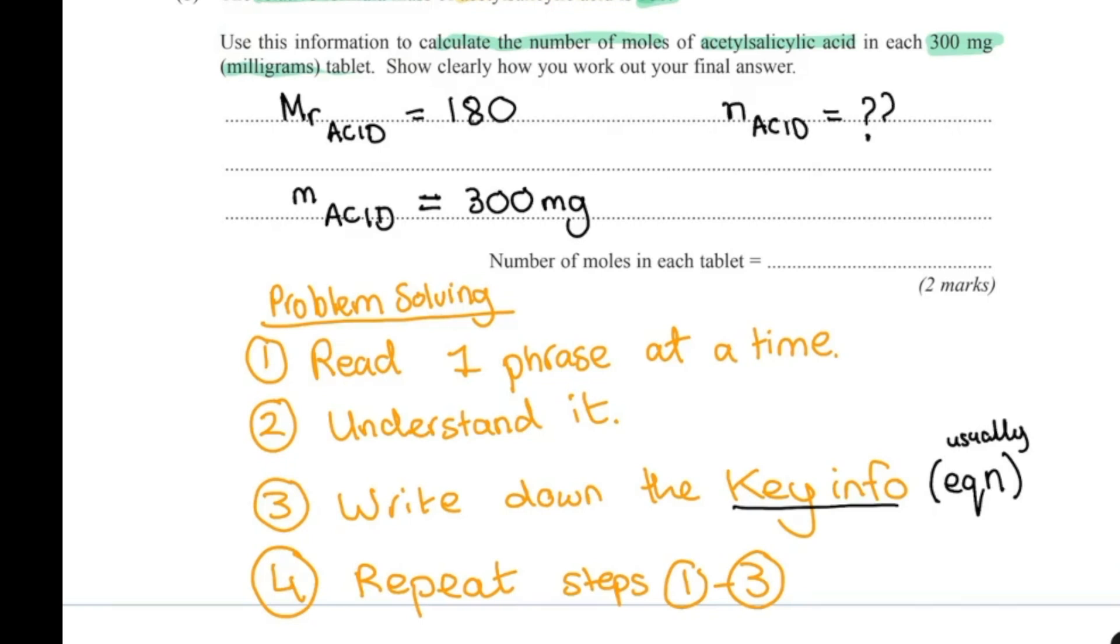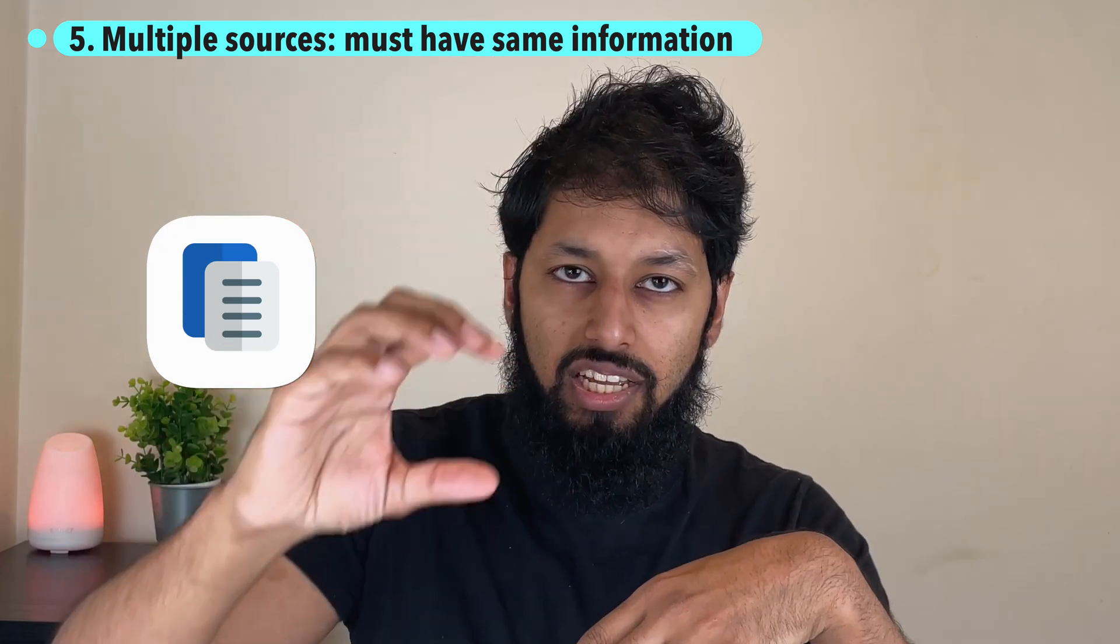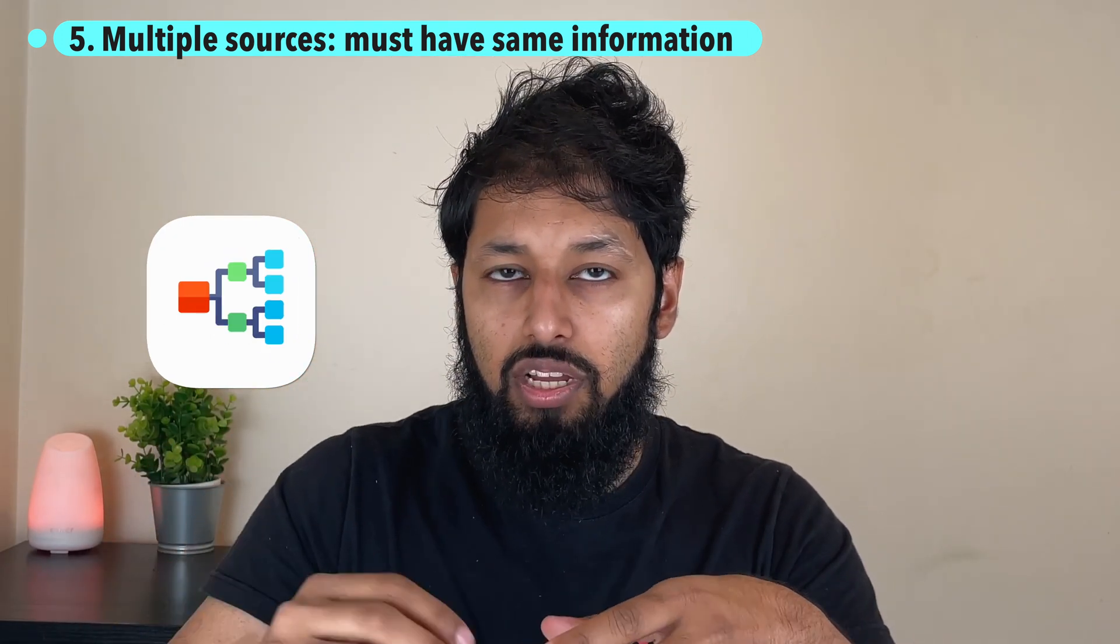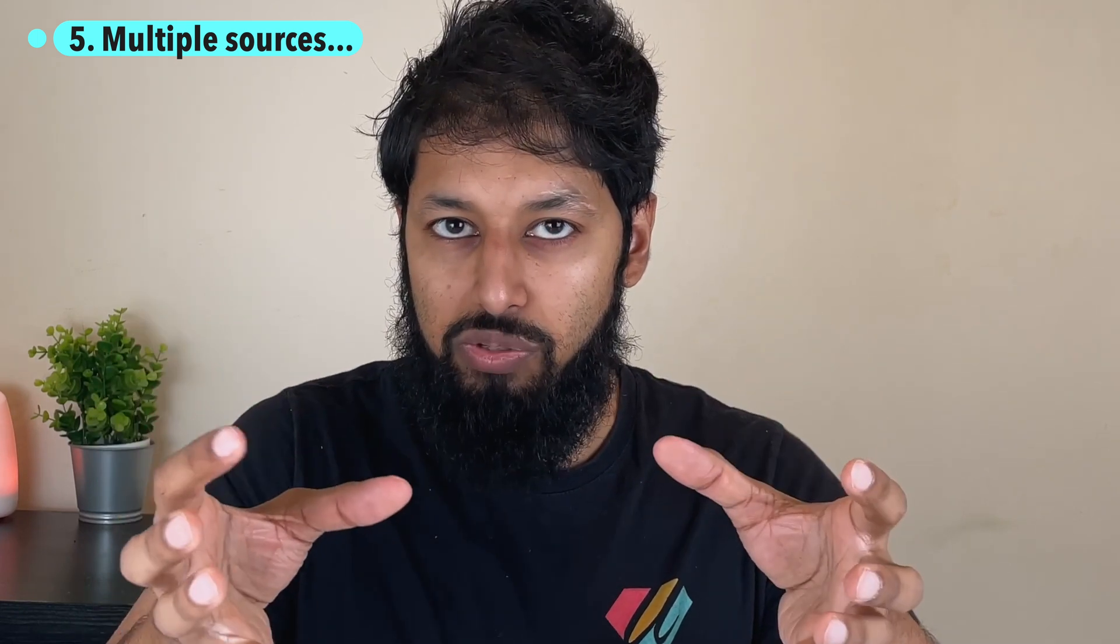There's no information, this is what we are working out. Number five is if there are multiple sources, for example they've got a text then they might have a diagram, they might have a table, you need to make sure the information is the same. Because sometimes what they do, and they're very snidey like this, what they'll do is they'll mention all the points minus one in the table for example, or they'll mention one additional point. Whichever way around, it looks like to the naked eye that all the information in the different sources are basically the same.